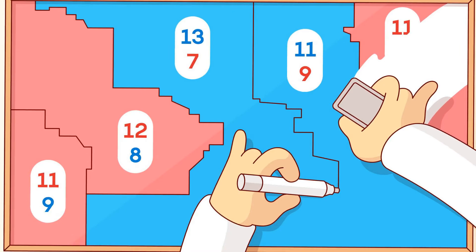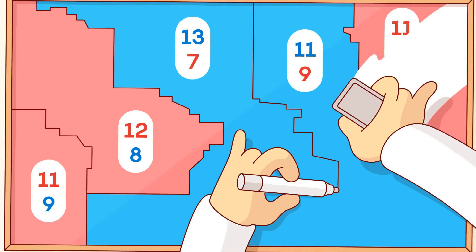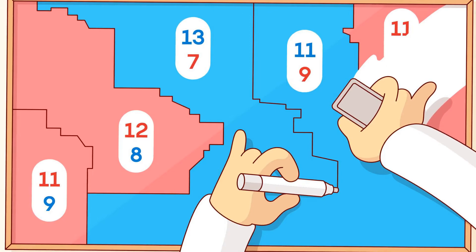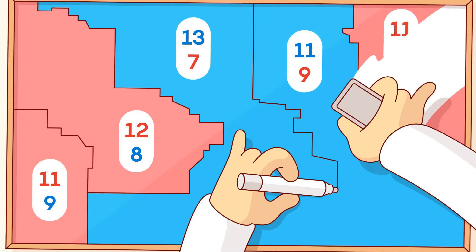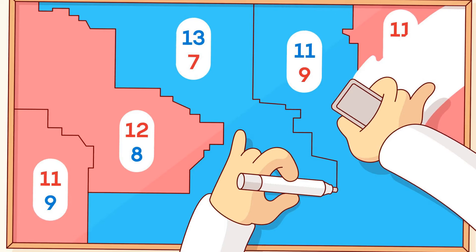The ability to determine voting districts confers a lot of power, and attending to some simple math is all that's needed to create an electoral edge. What if, instead of creating an advantage for one party over the other, you wished to use your power to create fair districts? First, you'd need to determine what fair means, and that can be tricky, as winners and losers often have different perspectives on fairness.